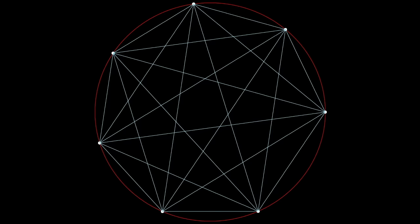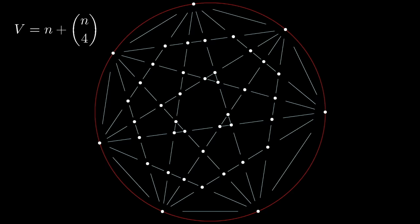But the key is to treat this as a new graph, where those intersection points are themselves vertices. So the total number of vertices here would not be N, but N plus the N choose 4 total intersection points.